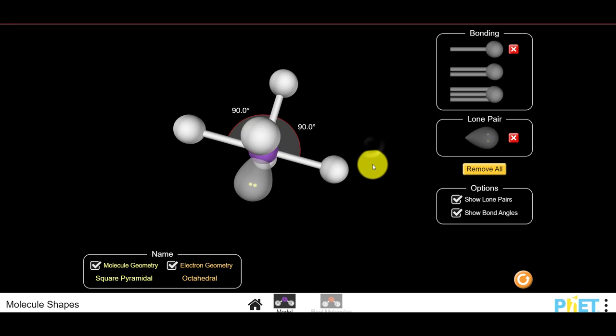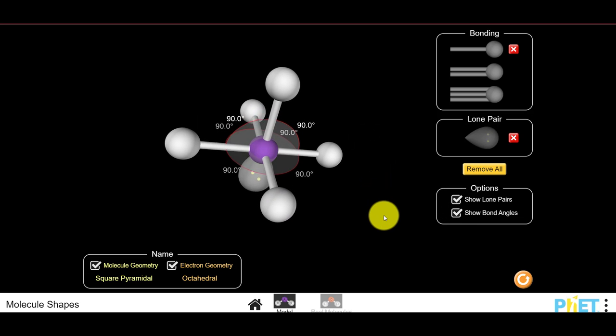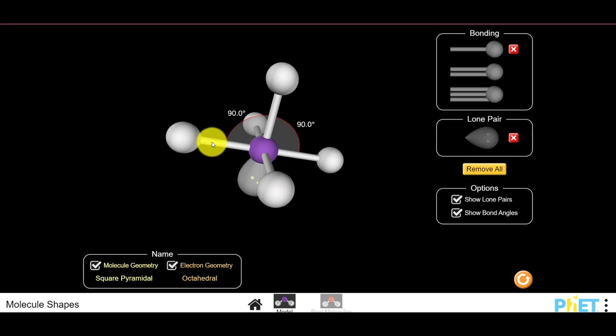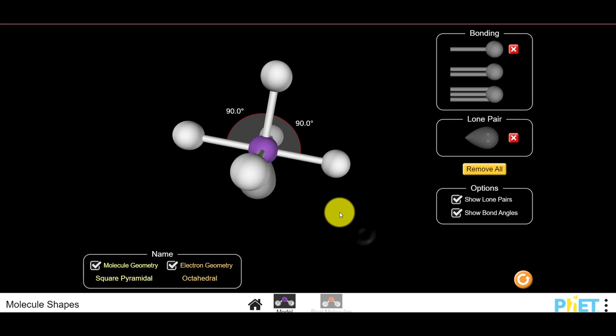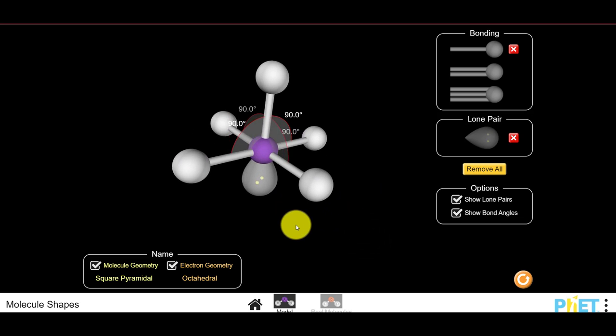As we know, once you introduce a lone pair, the lone pair would add some repulsive forces. So these bond angles would be squeezed down a little bit less than 90 degrees or a little bit less than 180.